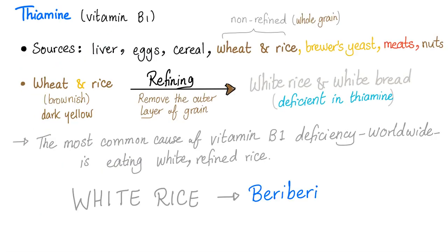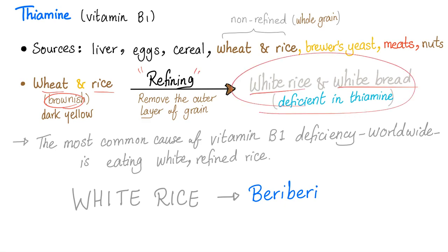Thiamine sources include liver, eggs, cereal, wheat, and rice — as long as they are non-refined, also known as whole grain — brewer's yeast, meats, nuts, etc. Wheat and rice are normally brownish, but in manufacturing they refine them, producing white rice and white bread. These are deficient in thiamine. Sometimes they fortify or enrich it with thiamine to prevent thiamine deficiency in the population.